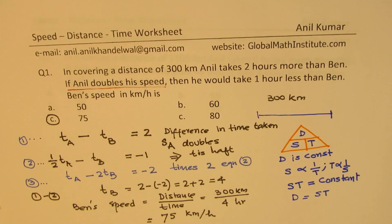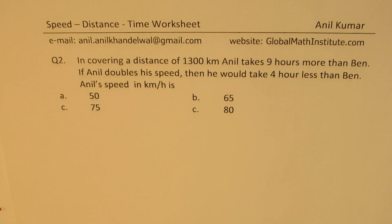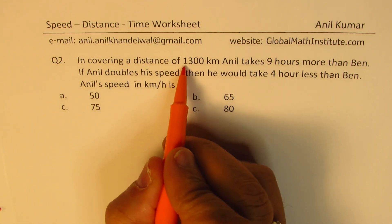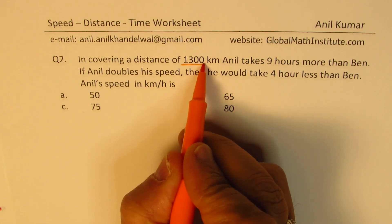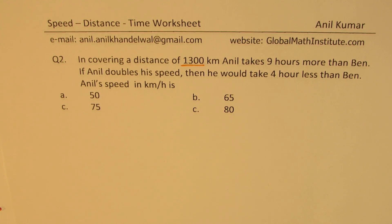For question number two, I made a slight change — the distance is 1300 kilometers, which makes for easier calculations. The question: in covering a distance of 1300 kilometers, Anil takes nine hours more than Ben. If Anil doubles his speed, then he would take four hours less than Ben. Anil's speed in kilometers per hour is what? You can pause the video, answer the question, and then look into my suggestions.